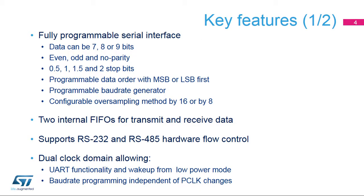The USART is a fully programmable serial interface featuring the following configurable parameters: data length, parity, number of stop bits, data order, baud rate generator, and a configurable oversampling mode by 8 or by 16. The USART can operate in FIFO mode, and it comes with transmit and receive FIFOs. You also have the option to use basic RS-232 flow control with CTS or clear to send, and RTS or request to send signals.